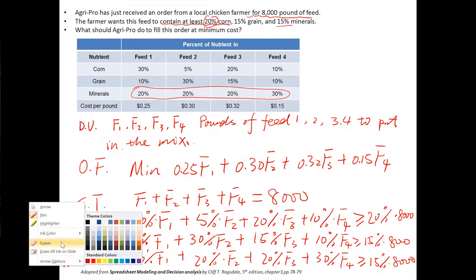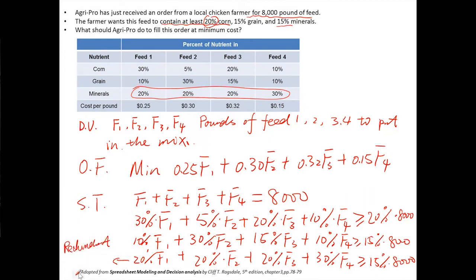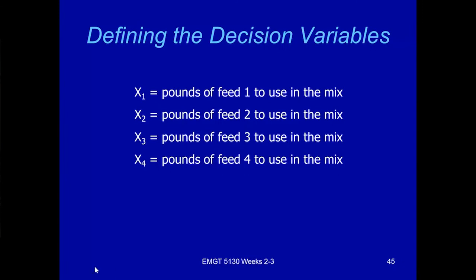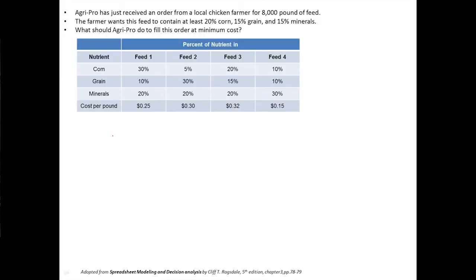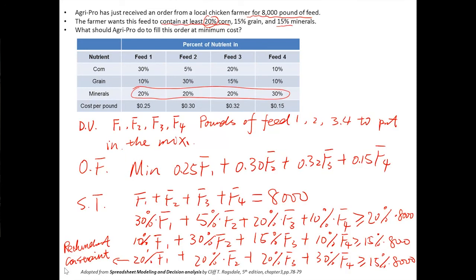Besides these ones, don't forget the non-negativity constraint: F_i are all greater than or equal to 0 for all i from 1, 2, 3, 4. That's my last constraint.